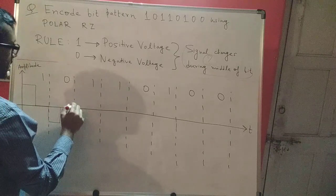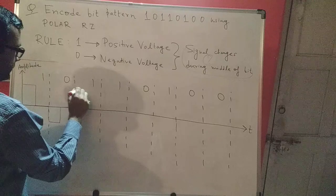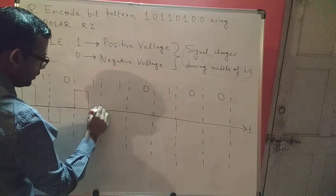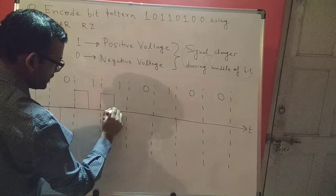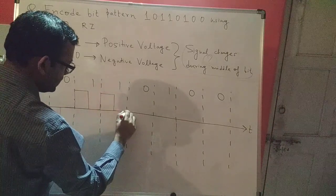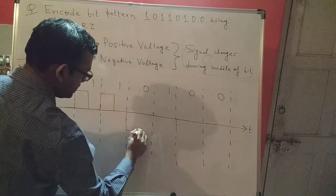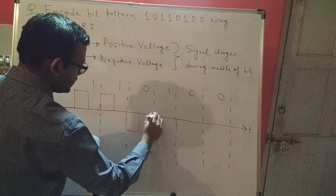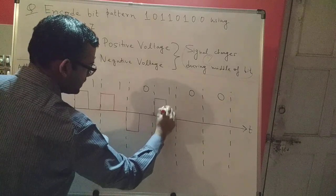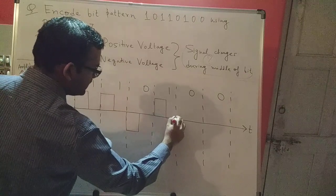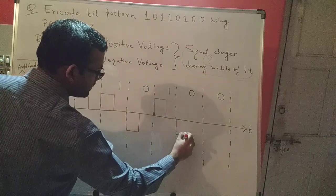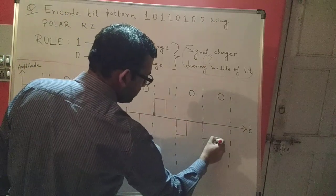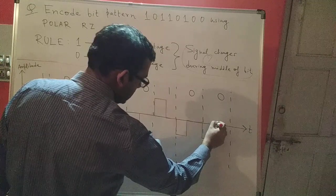Now what about this 1? 1 represents a positive voltage. So I go back up. Middle of the bit. Change. Stay. 1. Positive voltage. Go back up. Middle of the bit. Change. Stay. 0. Negative voltage. Go down. Stay. Middle of the bit. Change. 1. Positive voltage. Go up. Middle of the bit. Change. Stay. 0. Go down. Middle of the bit. Change. Stay. 0. Go down. Middle of the bit. Change. Stay.